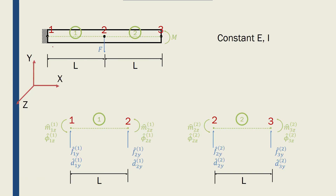We want to work on this example: a beam which is fixed at one end, and halfway along the length of the beam we have a constant force F applied in the negative y direction. At the free end of the beam we have a moment M applied in the counterclockwise direction, which is positive. The total length of the beam is 2L, so each section between nodes has length L.